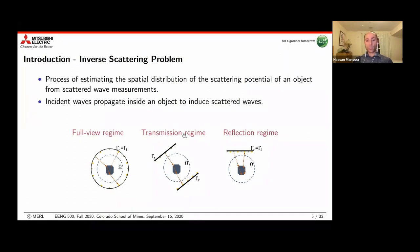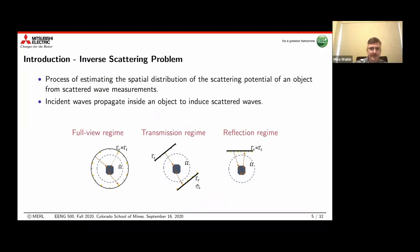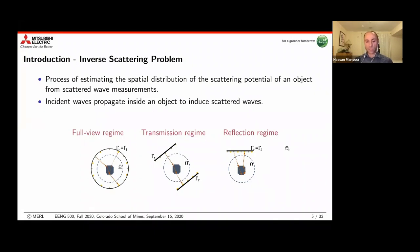The transmission regime is more limited: you have an array of transmitters on one side of the object and an array of receivers on the other side. The most difficult regime we want to tackle is the reflection regime, where both transmitters and receivers are located on one side of the object due to physical constraints. From the measurement of the scattered wave field on the same side as the transmitters, we want to determine the material properties.